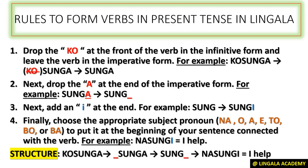Now let's learn the rules on how to form verbs in the present tense in Lingala. The first thing you want to do is drop the 'ko' at the front of the infinitive form, leaving the verb in its imperative form. For example, with 'kosunga' which means to help, we drop 'ko' and we're left with 'sunga' — 'sunga' is the imperative form.